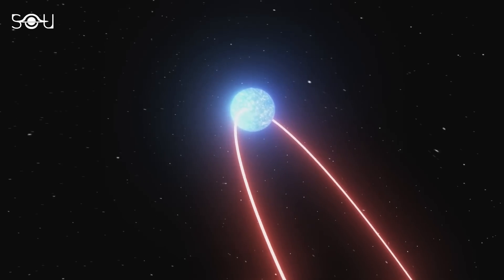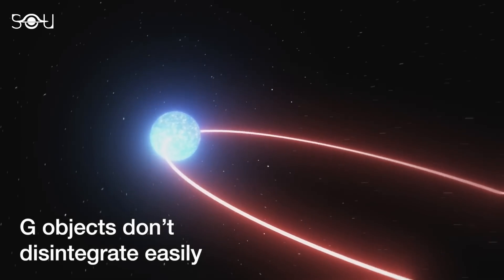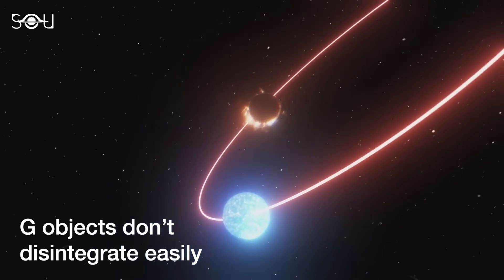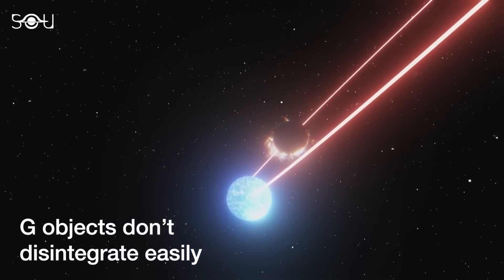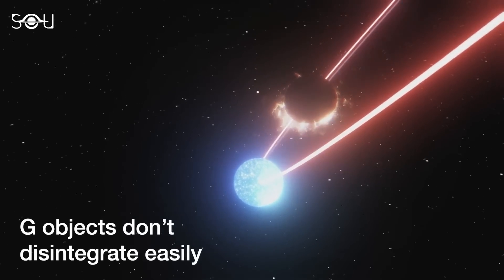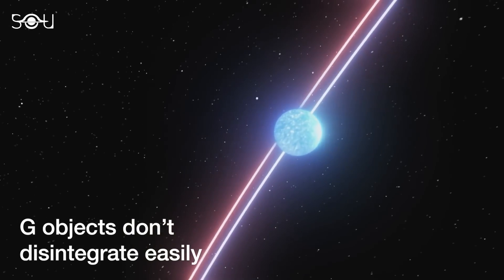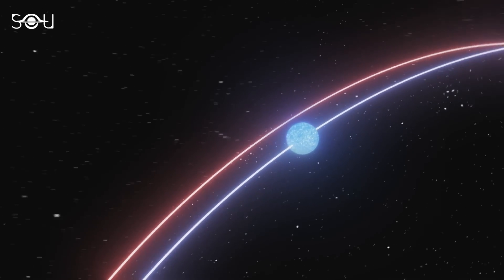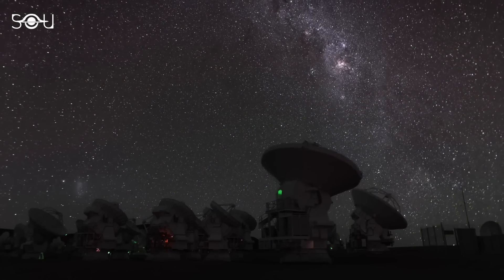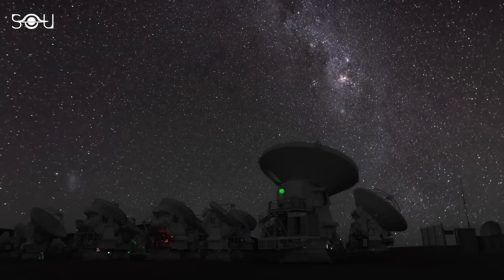However, the fate of G-objects is quite different. Despite stretching out at the periastron, they remain intact, forming a more compact object to continue their orbit rather than being sucked into the black hole. This unique dynamic makes the study of X-7 objects all the more exciting.